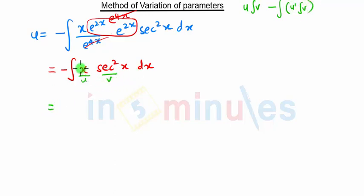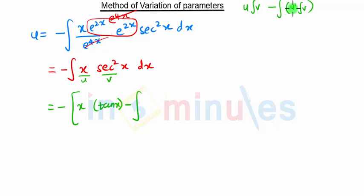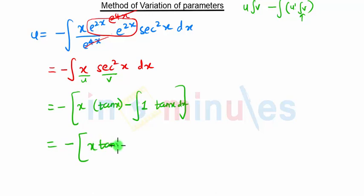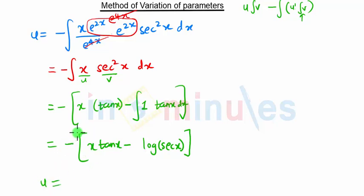In our case u and v correspond to these terms, so minus: u remains as x, the integration of sec²x is tan x, minus the integration of the derivative of u. The derivative of x is 1, and the integration of sec²x is tan x·dx. This gives minus x·tan x minus the integration of tan x. The integration of tan x is log(sec x) — these are direct formulas. Taking the negative sign inside, we get u as minus x·tan x plus log(sec x).